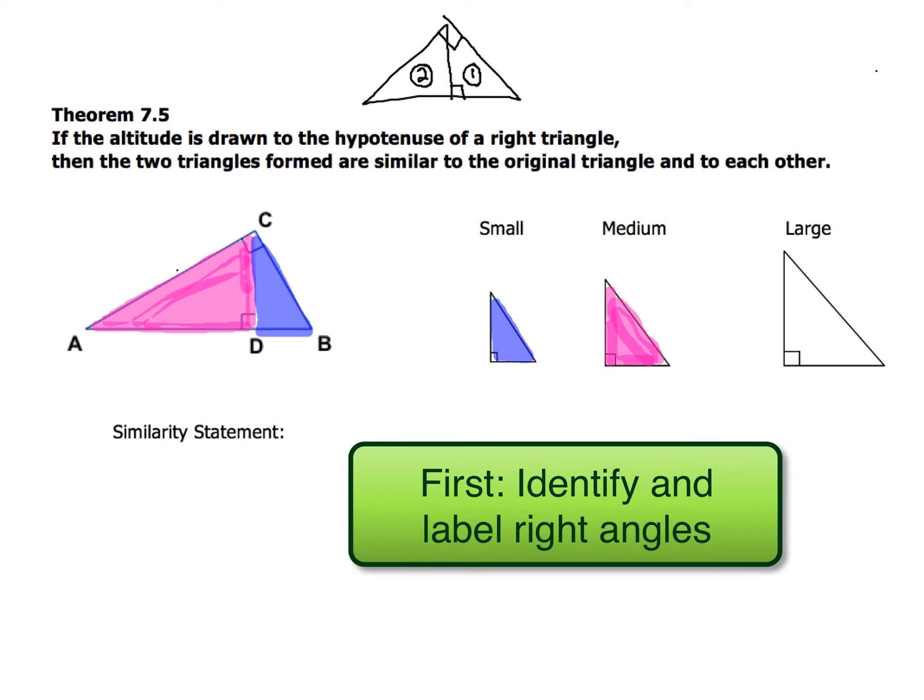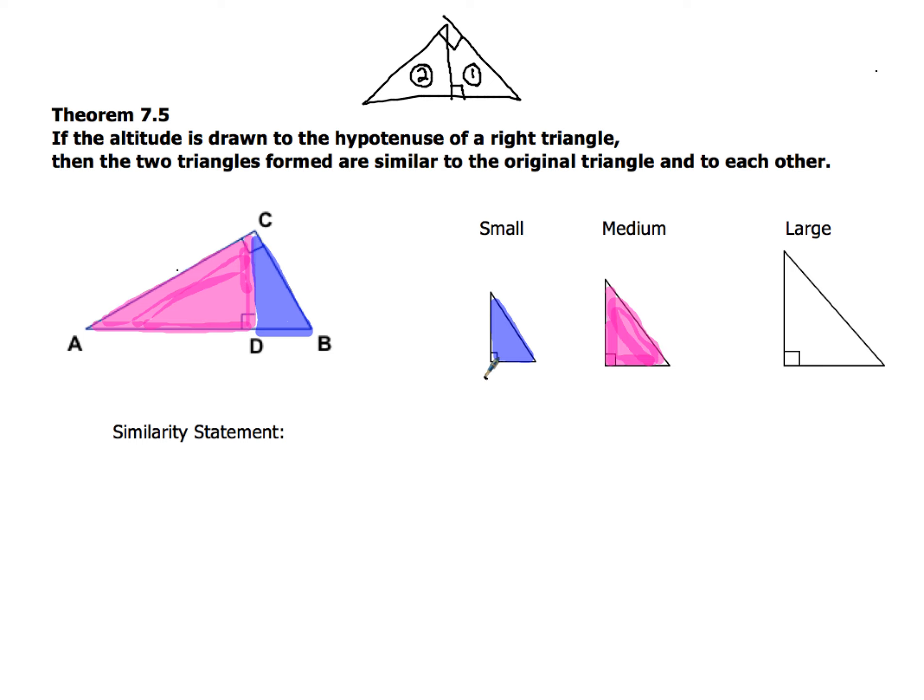First thing, identify where the right angles are. So in this case we've got some letters, so we're going to put the letters of each one of our right angles, angle D. And then for the medium triangle, it's going to be the same one, angle D. And then for the largest triangle, that's going to be angle C.